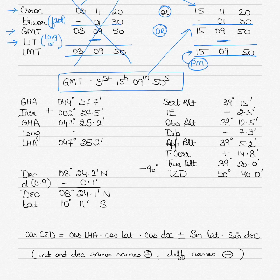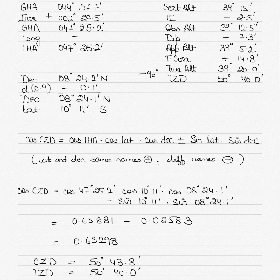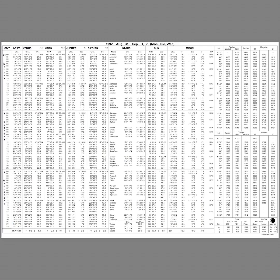Using the GMT, we go into the nautical almanac to find the GHA, declination, and the D value. Going to 31st August at 15 hours, we find the GHA and the declination of 8 degrees 24.2 minutes North. The declination is noted as decreasing from 15 to 16 hours, meaning the D correction found from the increments page will be subtracted, because the declination follows a decreasing pattern from 1500 to 1600 hours.